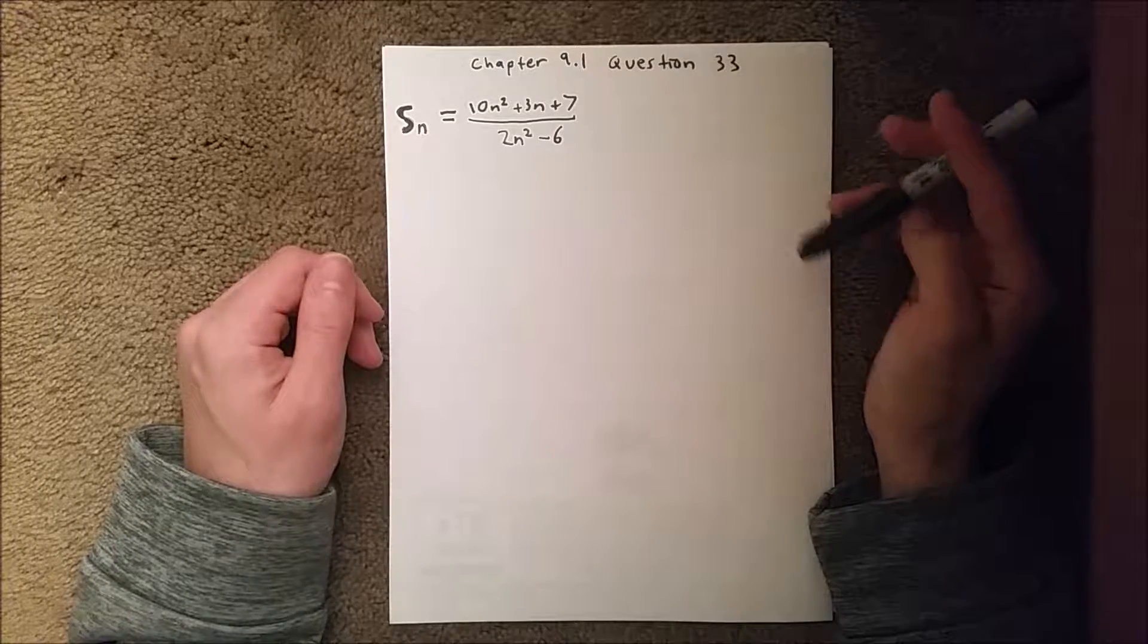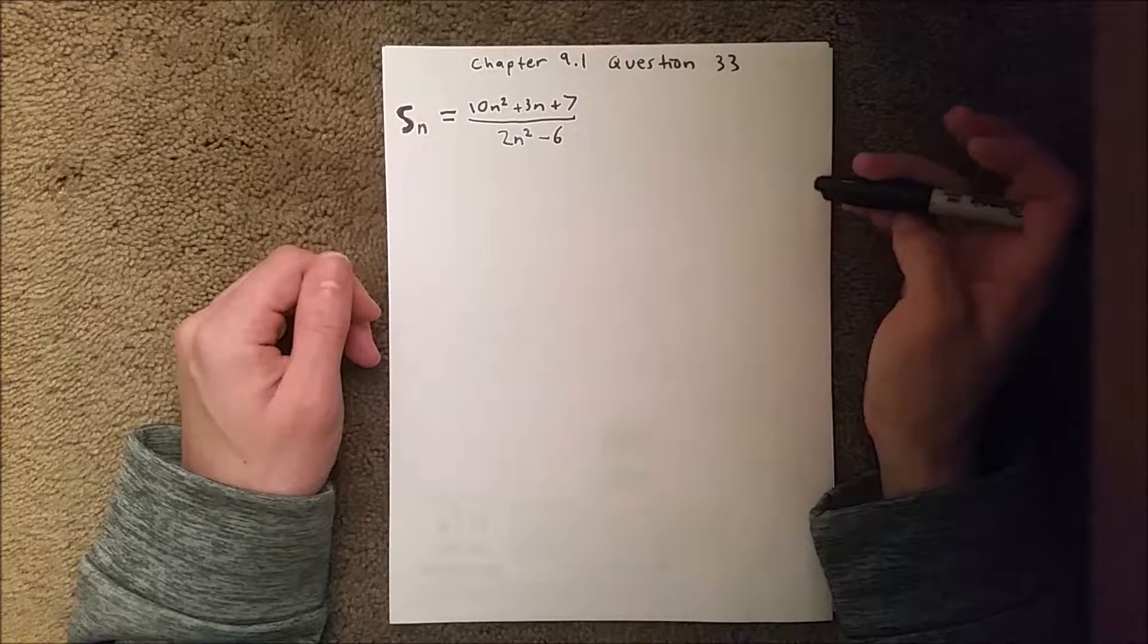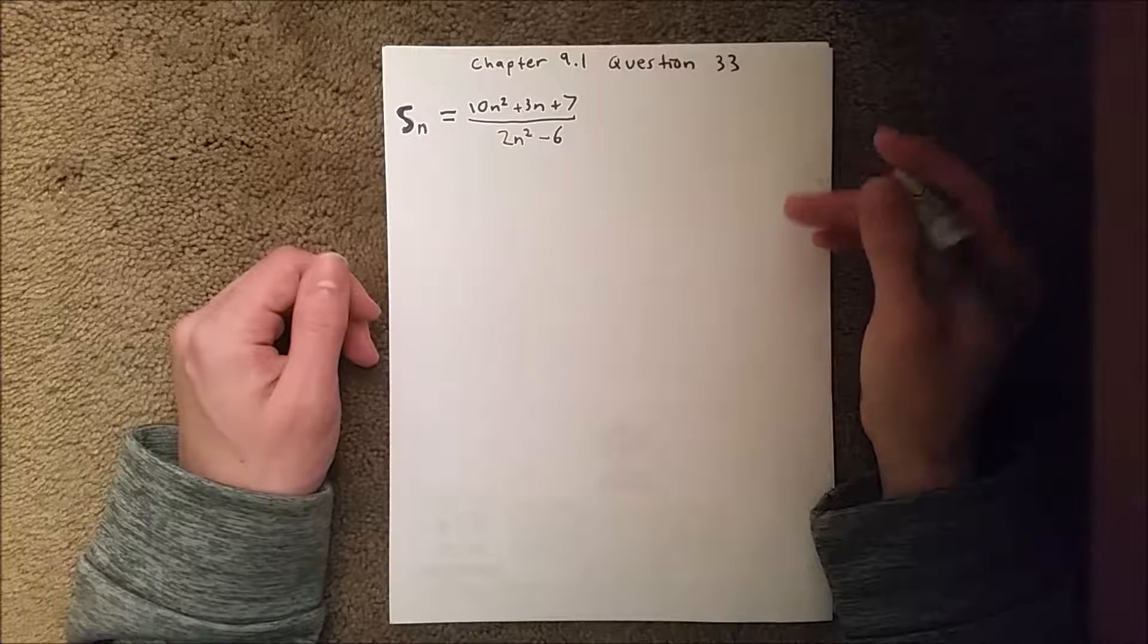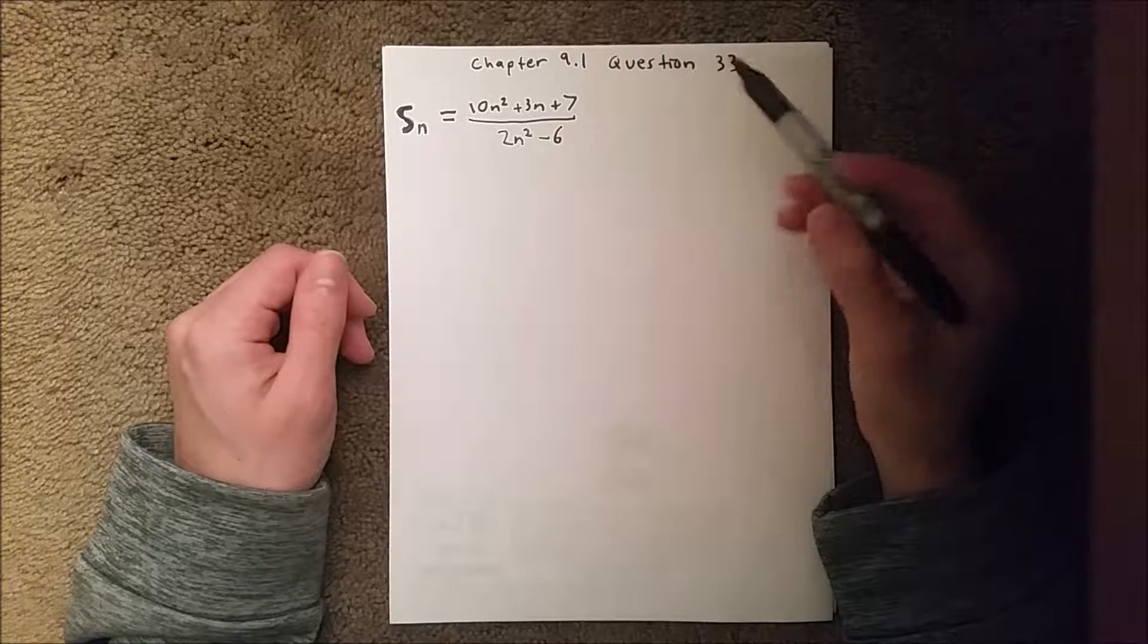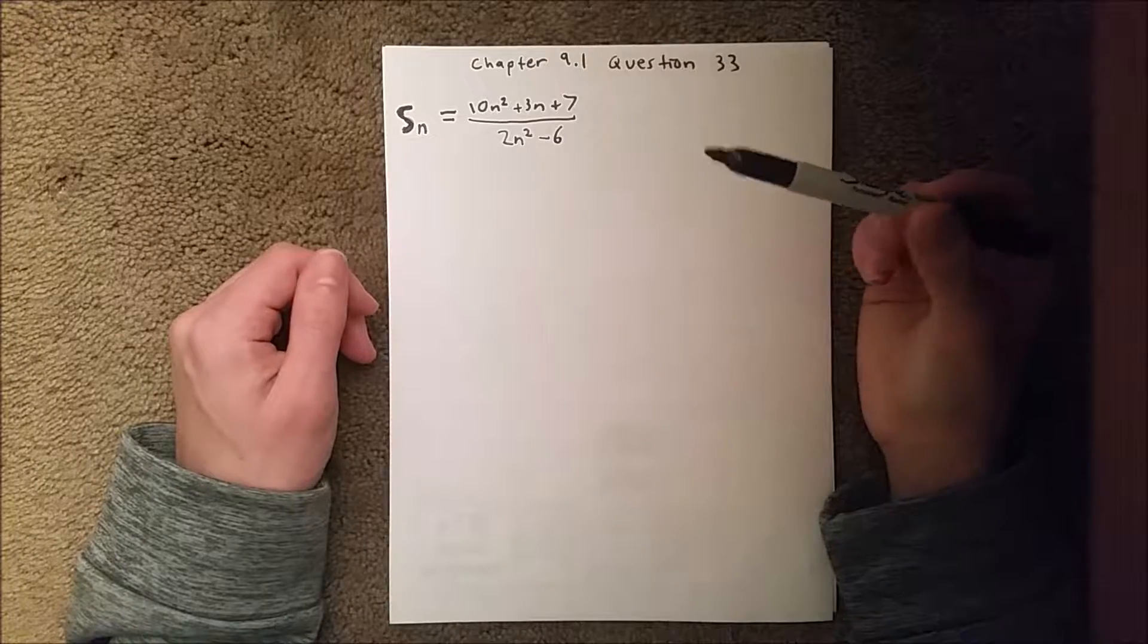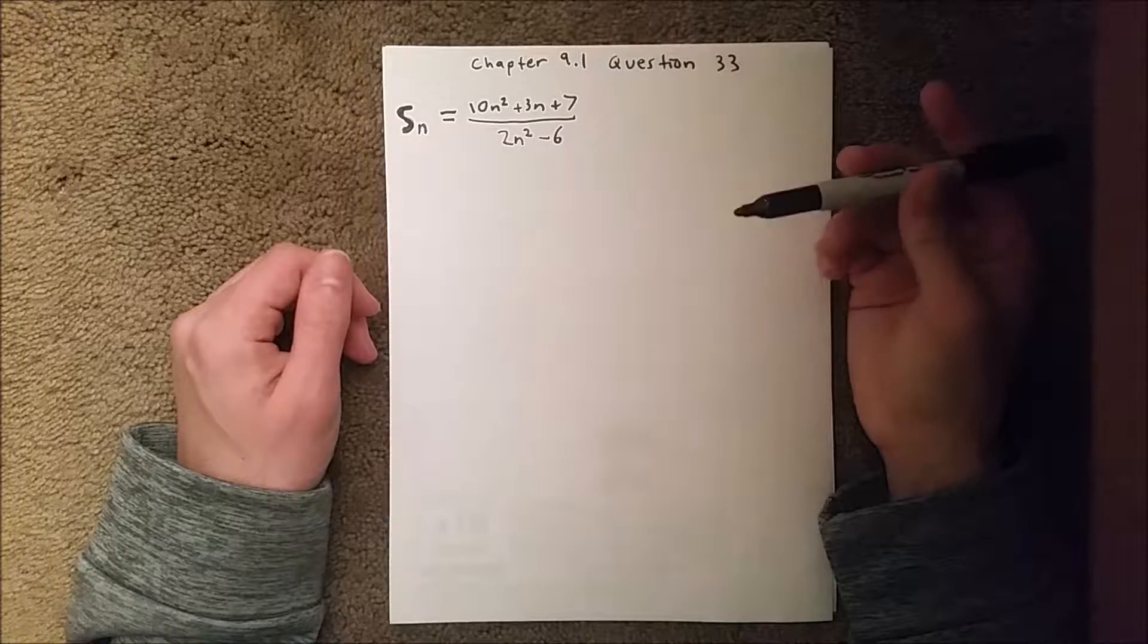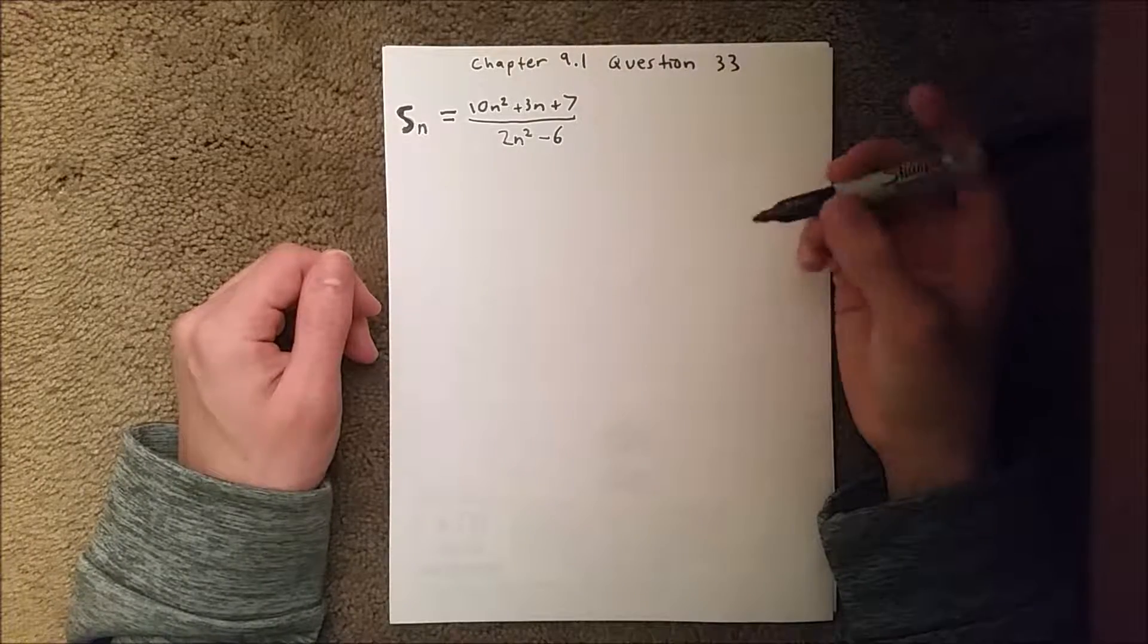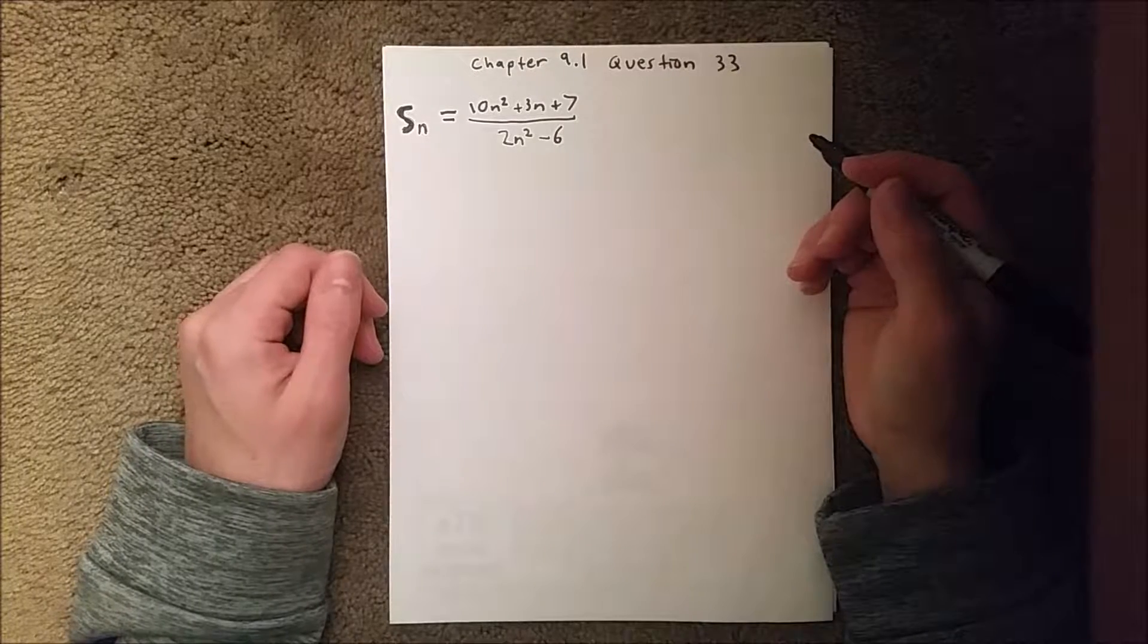In this question we have a particular sequence which is equal to 10n² + 3n + 7 over 2n² - 6, and we need to determine the convergence or divergence of the sequence.